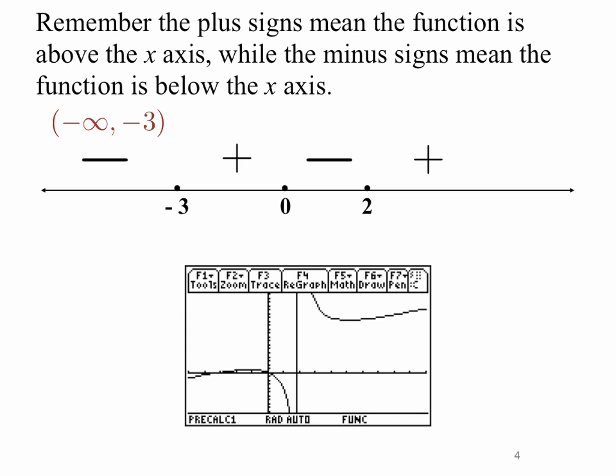And so we're ready to write an interval now. We see that this rational expression is negative between minus infinity and minus 3, not including the endpoint minus 3. It's positive or greater than 0 in the interval minus 3 to 0, negative again on the interval from 0 to 2, and positive on that interval from 2 to infinity.